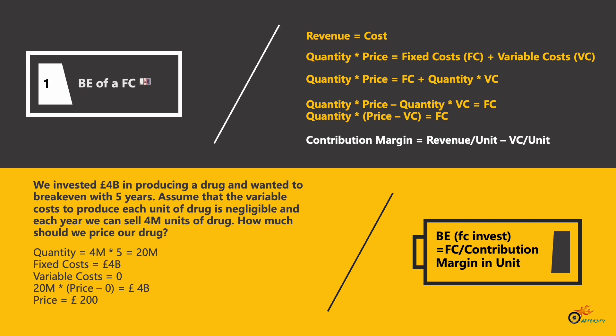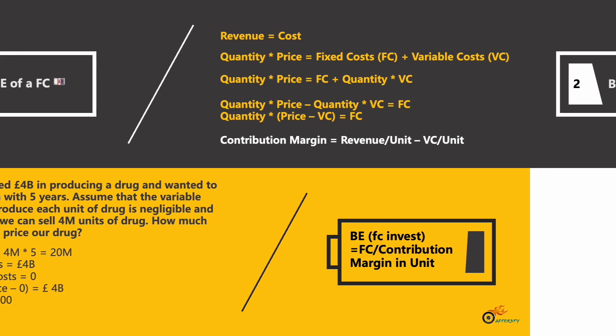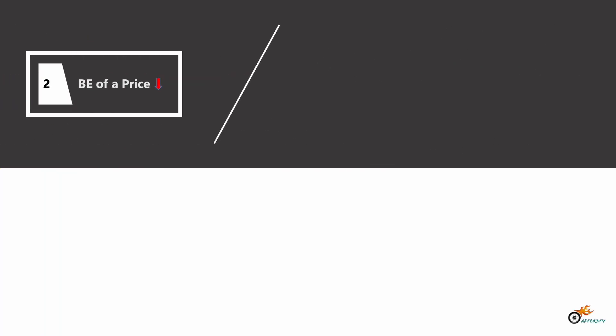Using the equation, 20 million times price minus 0 equals 4 billion, which gives us a price of 200 pounds. Now let's take a look at the second example: how to calculate the break-even point when a price decreases.